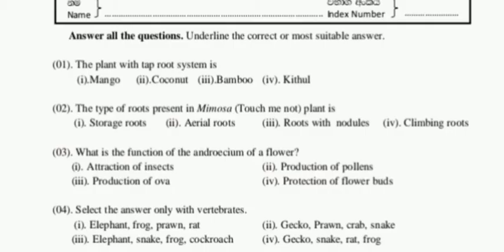Since brown is an invertebrate, we can remove option one. In option two: gecko — vertebrate, brown — invertebrate, crab — invertebrate, snake — vertebrate. Since brown and crab are invertebrates, we can remove option two as well.